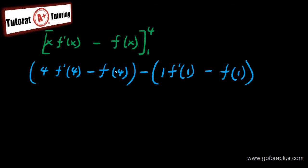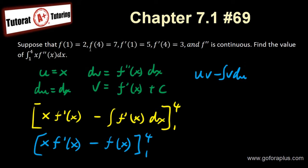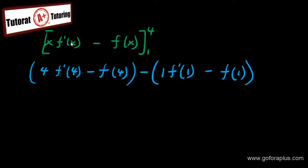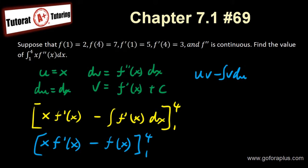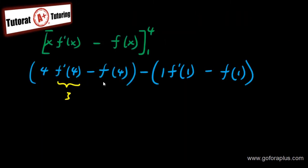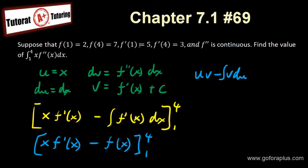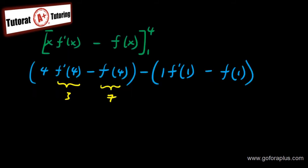Now what is f'(4), f(4), f'(1), and f(1)? f'(4) is 3. Okay, so I have this to be 3. f(4) is going to be 7. So this is going to be 7. f'(1). Now if you go back here, f'(1) is 5, and f(1) is 2. So this is 5, and this is 2.